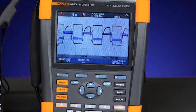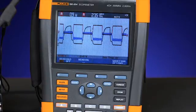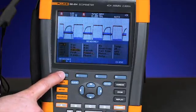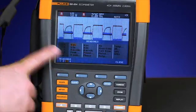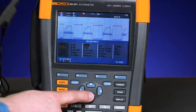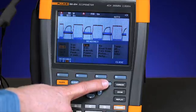For our final measurement, we're going to look at the current on input B. Select reading 3, choose input B, and now we're set up to measure current on input B.